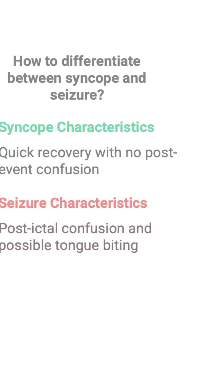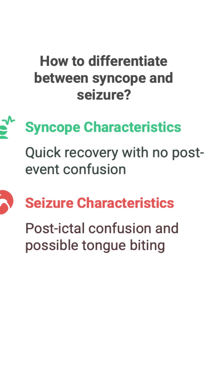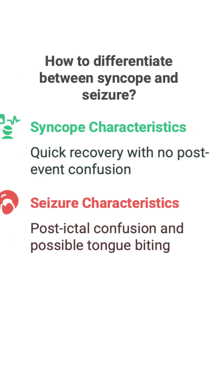Telling the difference between syncope and a seizure can be tricky. With syncope, they usually recover faster and aren't confused afterwards, although they might have some brief muscle twitches — myoclonic jerks. With seizures, there's often a post-ictal state — a period of confusion and disorientation — and they might bite their tongue, which is more common with seizures.